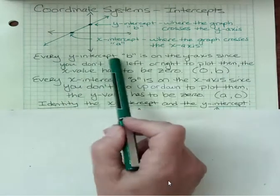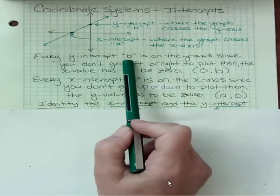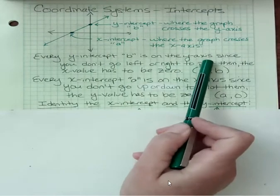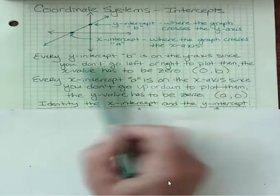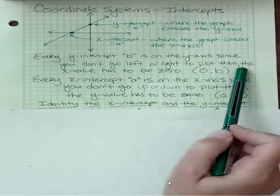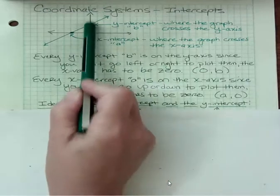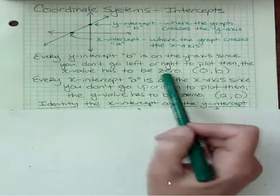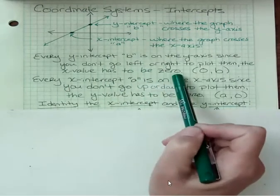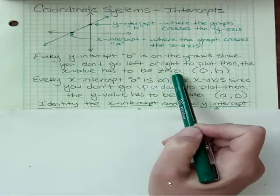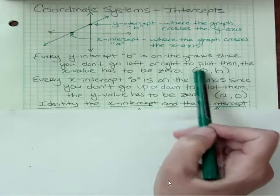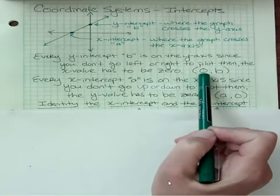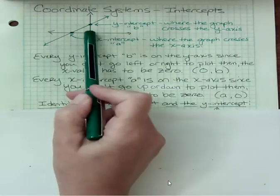Every y-intercept, which we could call b, is on the y-axis. And since you don't go left or right to plot them, you just go straight up or straight down, then the x value has to be zero. So when you look at a y-intercept, you know that your x has to be zero because we don't go left or right.